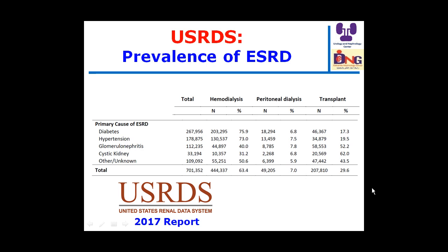The last report of the United States Renal Data System on causes of end-stage kidney disease shows that among these 700,000 patients, diabetes is the leading cause, followed by hypertension, glomerulonephritis, and cystic kidney disease. The majority of diabetic patients are supported by regular hemodialysis, approximately 7% by peritoneal dialysis, and only 17% by renal transplantation.